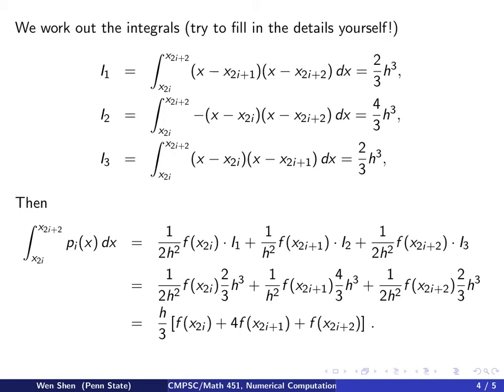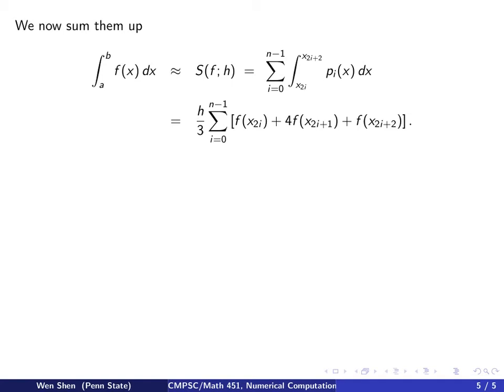Then the next step will be summing up all these integrals on the subintervals. So let's look at that. So the integral from a to b of f(x) is approximated by, we introduce this notation here, we call S, stand for Simpson, Simpson's rule for the function f with interval h. And we'll just be summing up i from 0 to n minus 1, our subinterval x2i to x2i plus 2 integrating of pi.